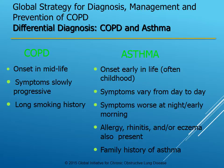COPD onset is in midlife, with slowly progressive symptoms and a long smoking history. Classic asthma onset is early in life — symptoms vary from day to day, are worse at night, and usually show a 20% change in their PEFR. Allergy, rhinitis, or eczema is also commonly present, along with a family history of asthma.